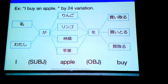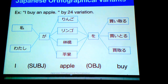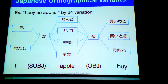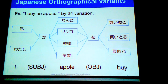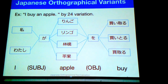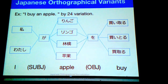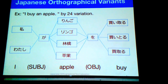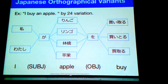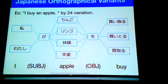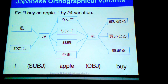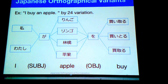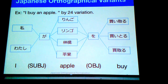Japanese orthographical variants cause this problem. For example, 'I buy an apple' translated into Japanese — 'Watashi ga ringo wo kaitoru' — 'I' can be written in two patterns, 'apple' in four patterns, and 'buy' in three patterns. So 'I buy an apple' can be represented by 24 variations.